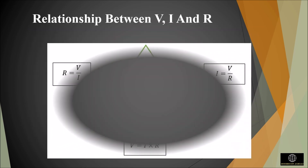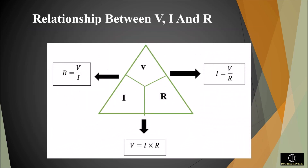The triangle figure shown here helps you to remember the three important relationships: I is equal to V by R, V is equal to I times R, and R is equal to V by I. By covering any one of the letters, you can obtain the arrangement of the other two on the right-hand side of the formula for determining the value of the covered letter.